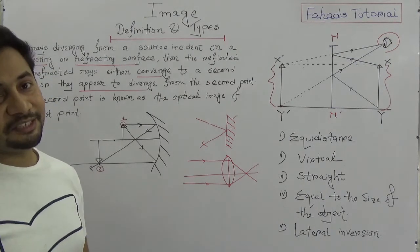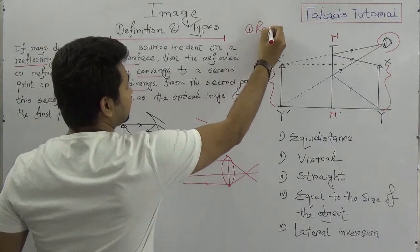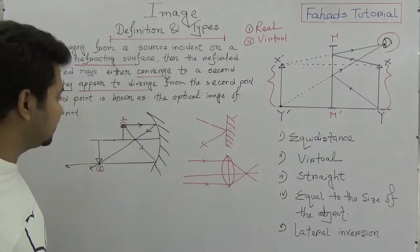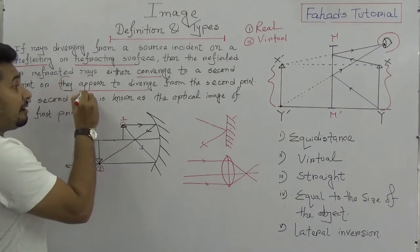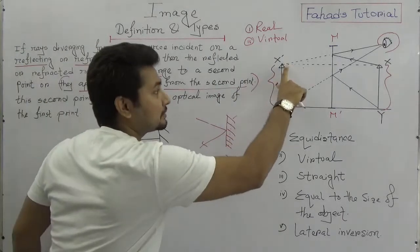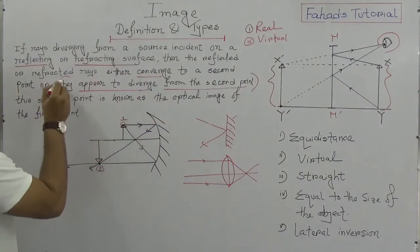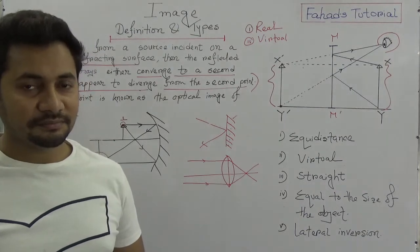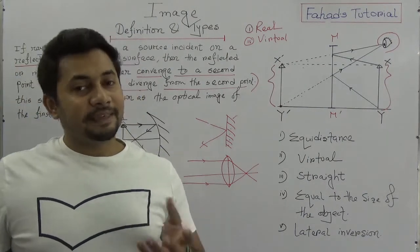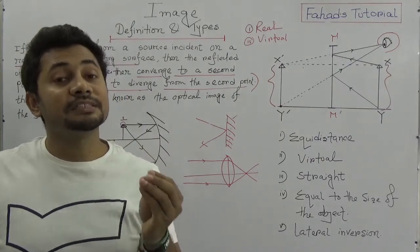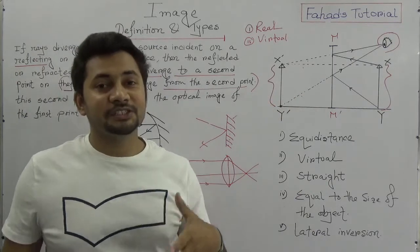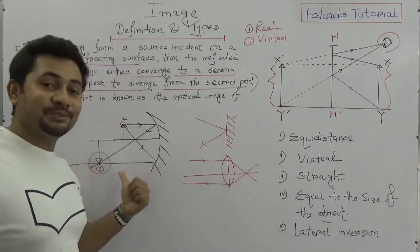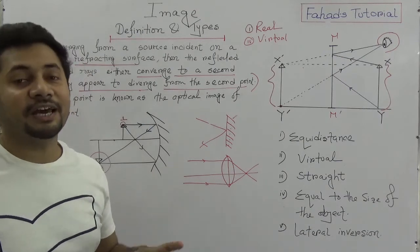Now we can see the two types of image. Number one is the real image, and number two is the virtual image. The virtual image is when the rays appear to diverge from the second point. But when the rays actually converge to the second point, it is called the real image. The real image can be observed by our eyes and can also be received on a screen. But the virtual image cannot be received on a screen — it is only appearing. That is the difference between the real image and the virtual image.